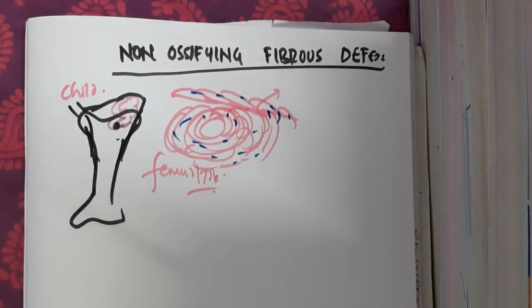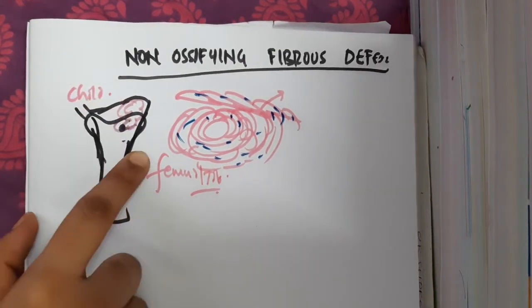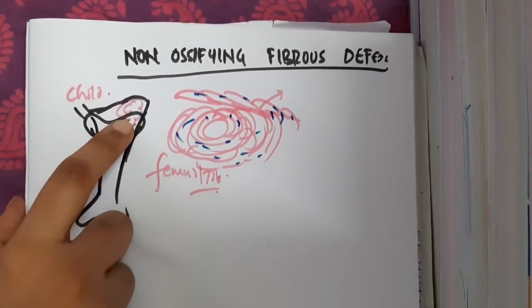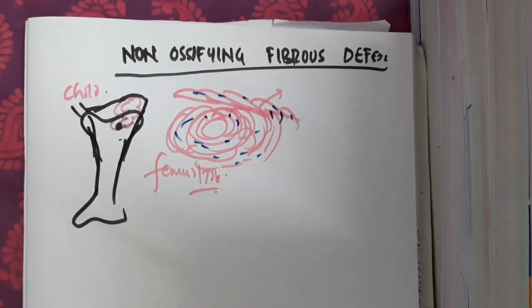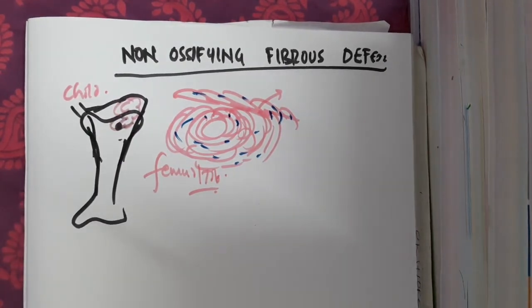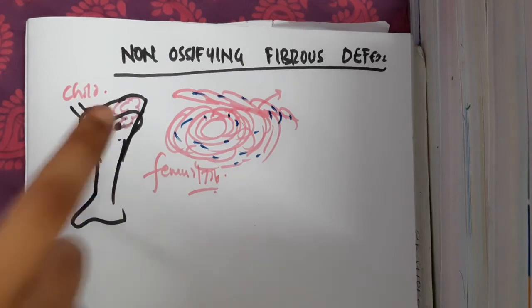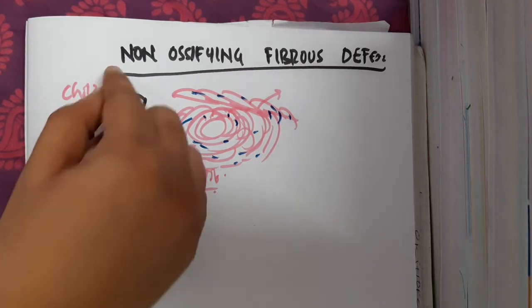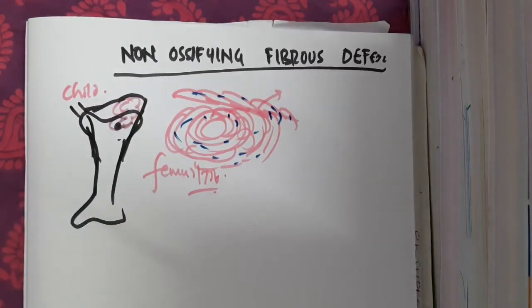Treatment: once the patient attains skeletal maturity, these lesions will completely ossify and may disappear, though pathological fractures can occur. If the patient is symptomatic — either with a mass or pain — curettage and bone grafting is performed.